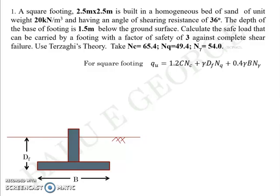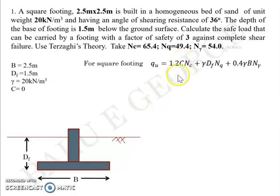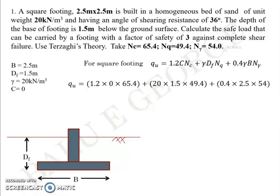Since it's a square footing, we use: q_u = 1.3·C·Nc + γ·df·Nq + 0.4·γ·B·Nγ. Nothing is said about the water table, so we don't consider it. From the given data, B and df are given, γ = 20 kN/m³, and c = 0 because it's a cohesionless sand. So the first term vanishes. With df = 1.5 m and Nq = 49.4, we substitute all known values to get q_u.